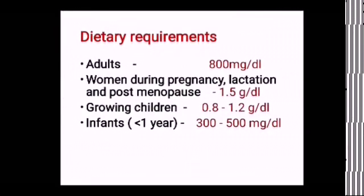Regarding dietary requirements — the recommended dietary allowance — adults need 800 mg per day. Women during pregnancy, lactation, and post-menopause need 1.5 grams, that is 1500 mg per day. Children require 0.8 to 1.2 grams per day, and infants under one year need 300 to 500 mg per day.